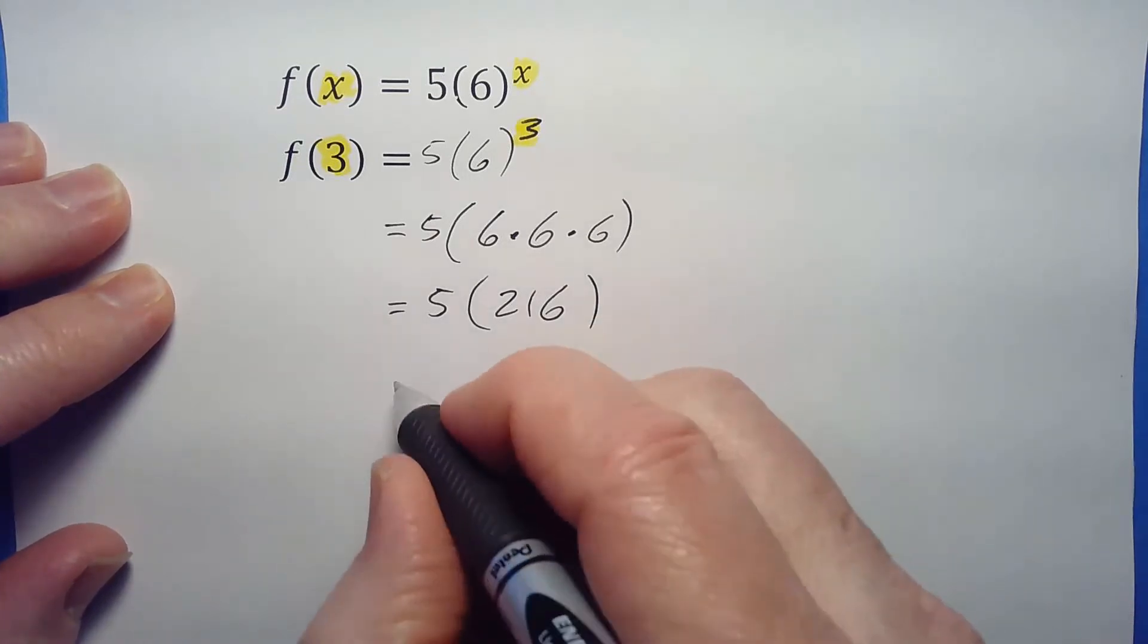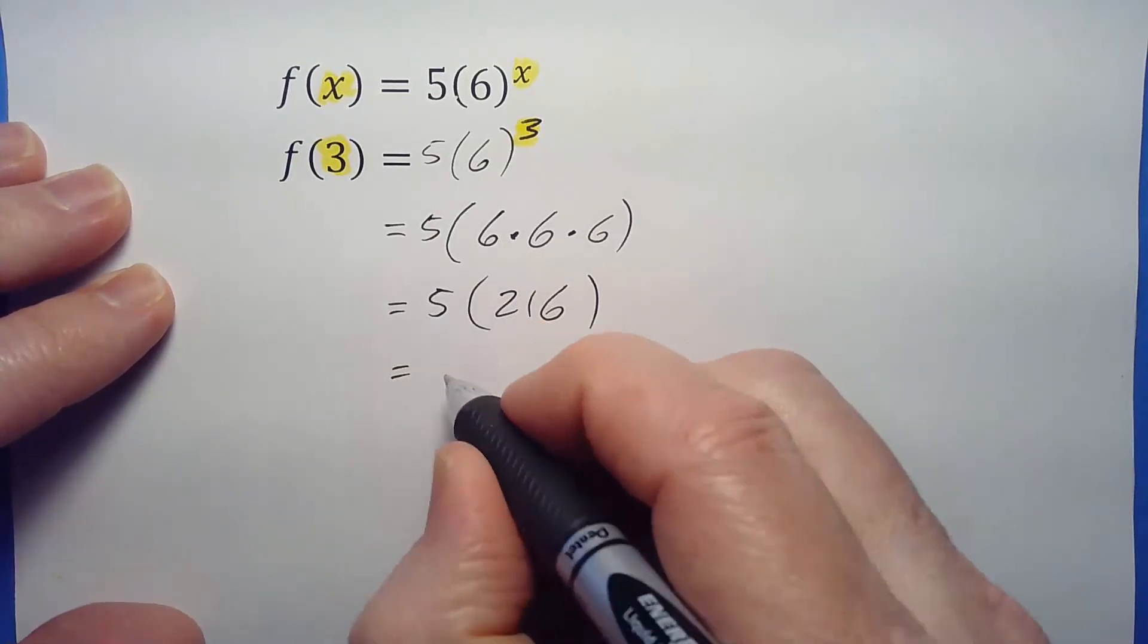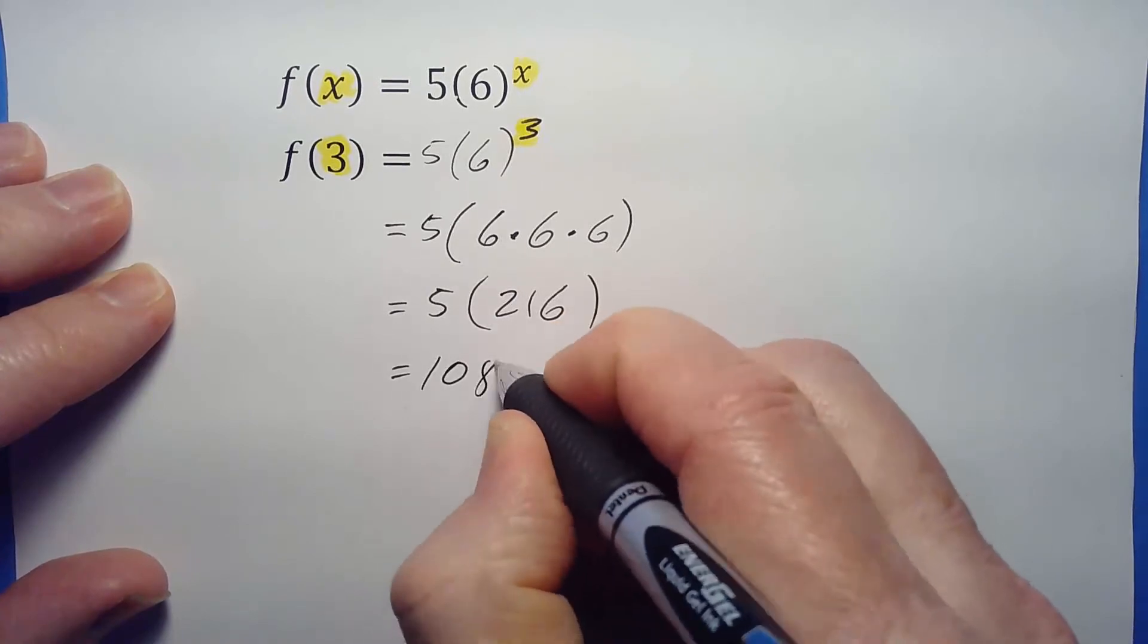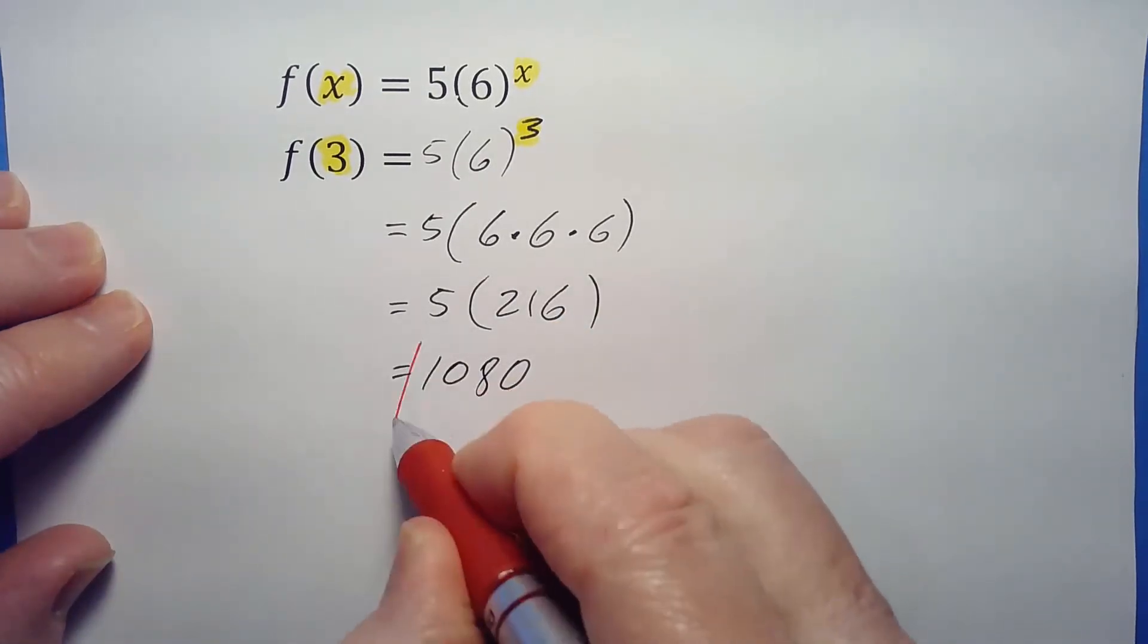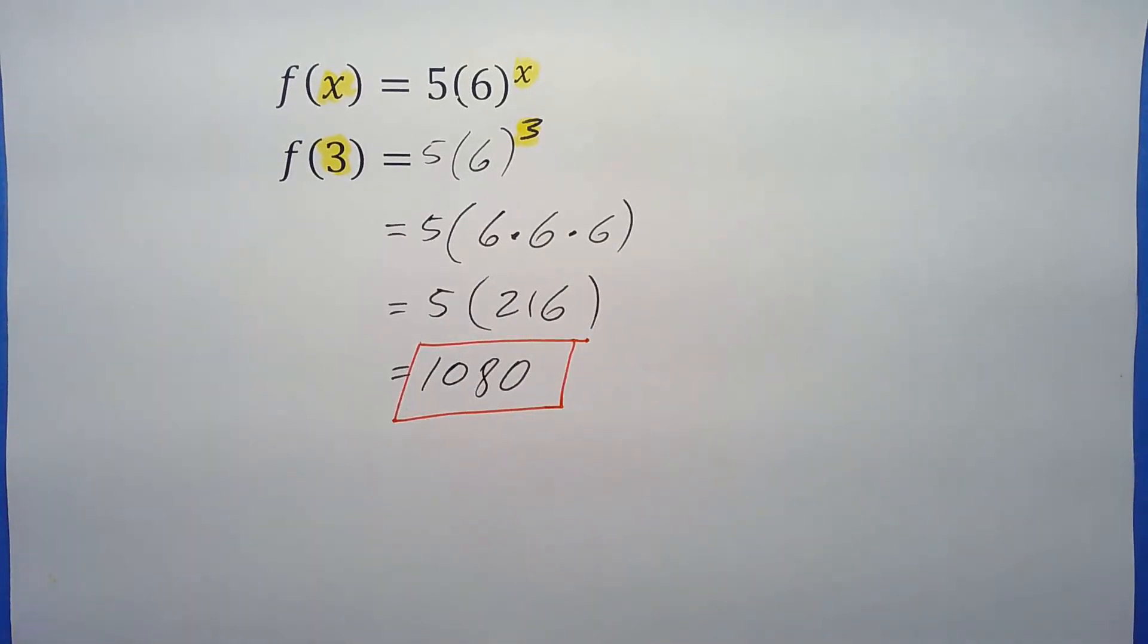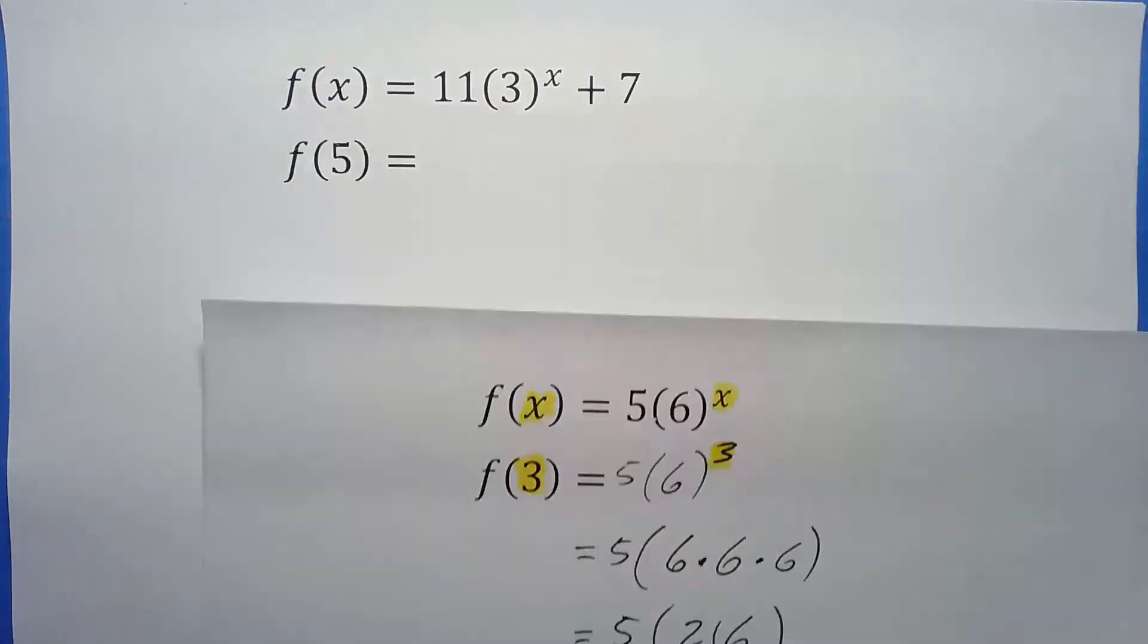You don't want to make a mistake. Just take your time, write it out, and you'll eventually get an answer of 1,080. That's how that works. Let's try another one.